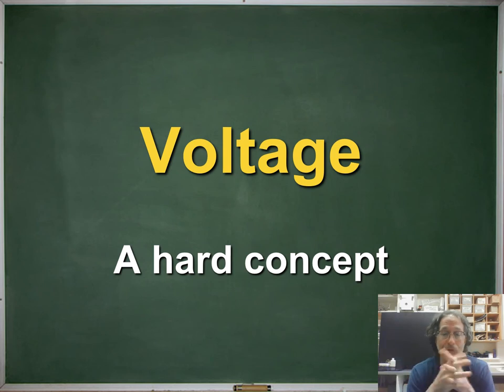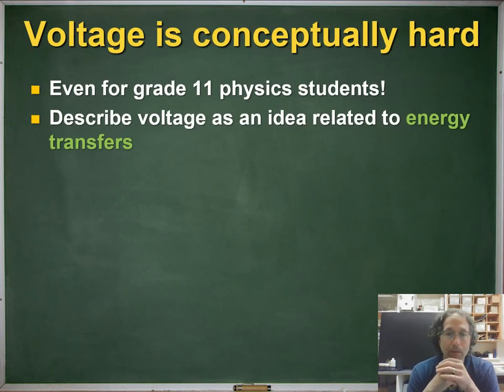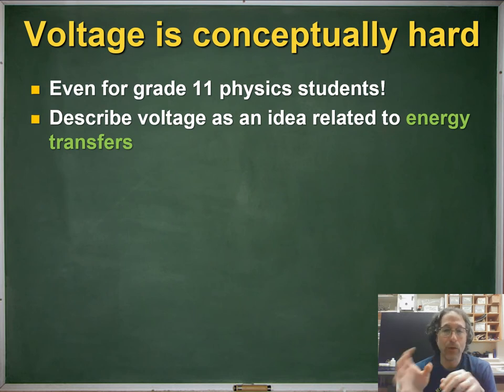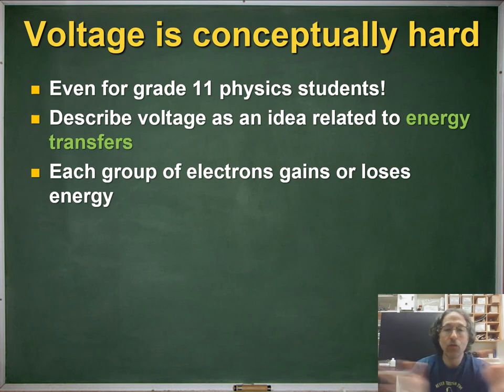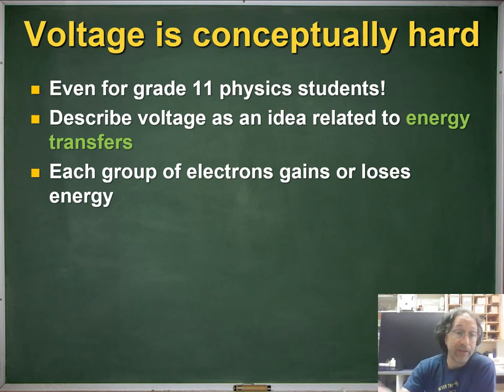Now, the second key conceptual idea that goes along with the unit on current electricity is voltage. This is a hard concept. It's challenging for my grade 11 physics students. And so I think we need to be really careful how we use this with our grade nine. So I like to describe voltage as an idea related to energy transfers. So each group of electrons that move through a certain part of the circuit will gain or lose a certain amount of energy. So I'll say things exactly like this. If it's a nine volt battery, then as each group of electrons moves through that battery, they gain nine units of energy. When they move through a load, that group of electrons loses nine units of energy or transfers it to the load itself.